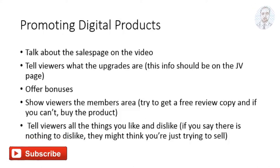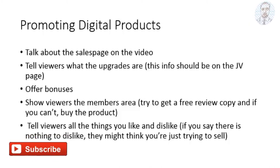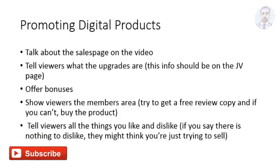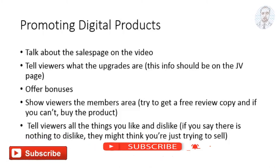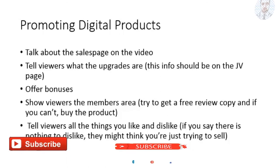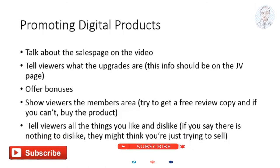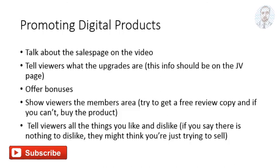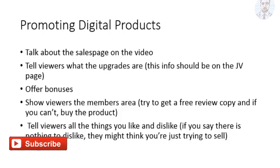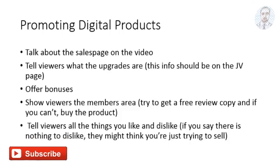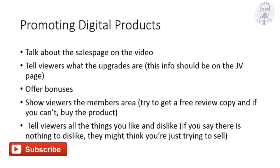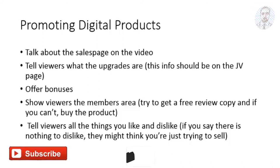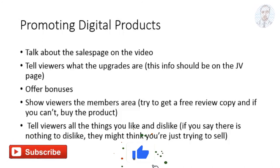Also try to read some of the testimonials that are on the sales page, and try to tell viewers what the upgrades are — this information should be available on the JV page. To give people an incentive to click on your affiliate link, try to create some bonuses. You don't have to make the bonuses yourself; you could just use private label rights content and use that as bonuses.